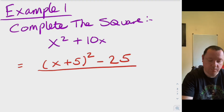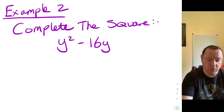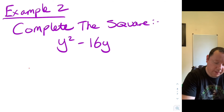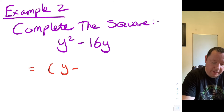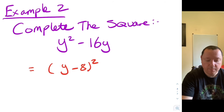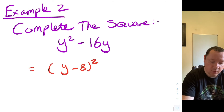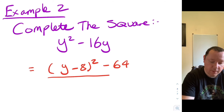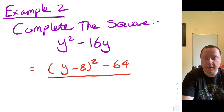Let's look at a second example. Example two says complete the square: y squared minus 16y. We're looking to make that look like a square bracket — y minus 8 squared, because half of 16 is 8, which gives us our 16y term. But 8 squared is 64 and there's nothing on the end, so we need to take away 64 to balance it up. The answer is y minus 8 squared take away 64.